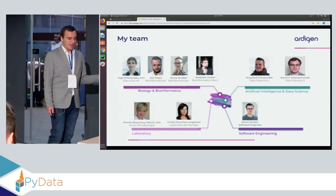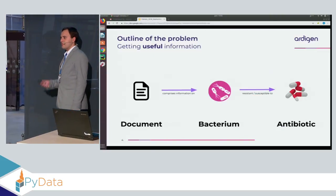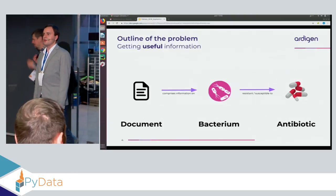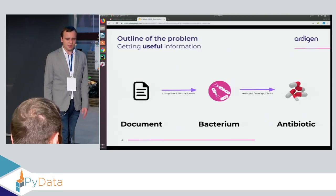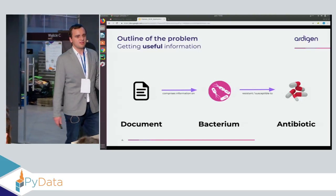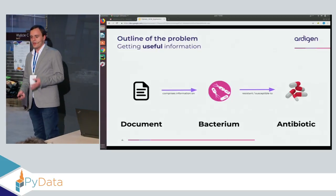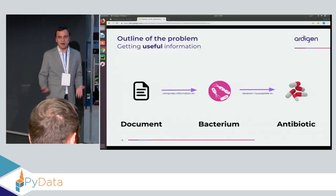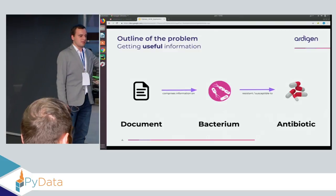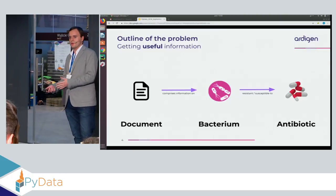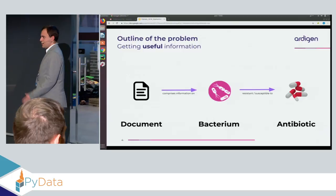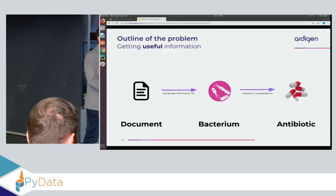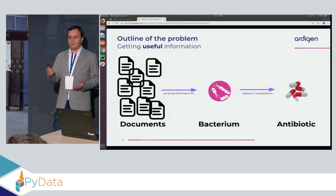The problem I've been faced with is at least somewhat biological. Let's assume we are looking for useful information about bacteria — namely some strains of bacteria and their interaction with antibiotics. We'd like to know if a given strain is susceptible to a given antibiotic, and we are looking for this information in a document — it can be a scientific paper or a patent. If we outline the problem like that, it's pretty straightforward.